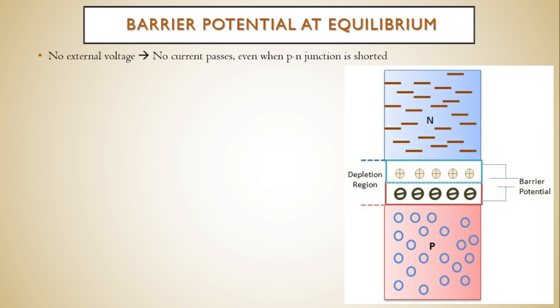Whenever there is no external voltage applied across the P-N junction crystal, no current is going to pass through the external circuit, even when the P region and N region are shorted. Thus we can say that the net current through the junction must be zero, separately for both free electrons as well as positive holes.